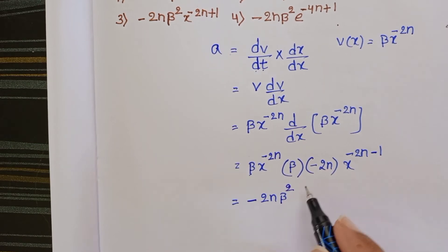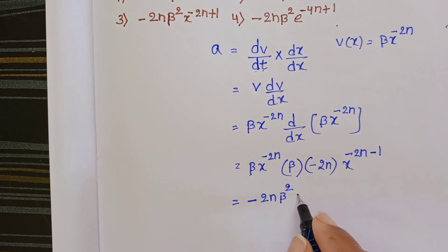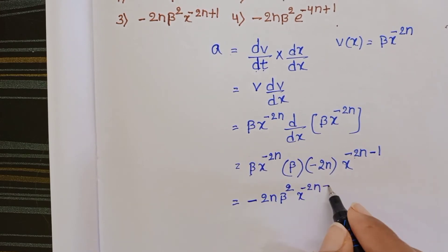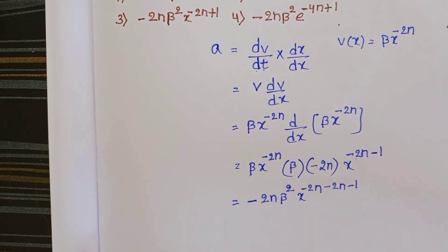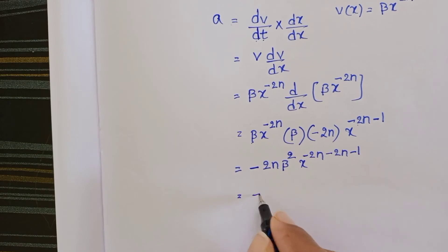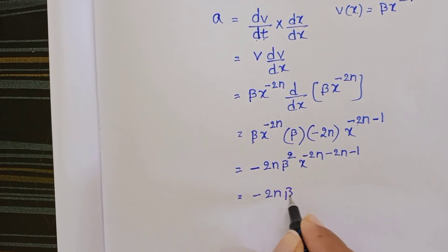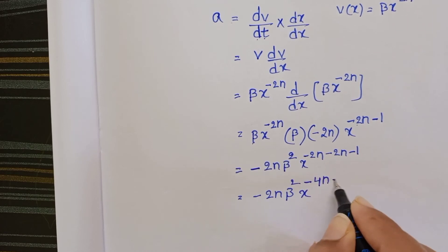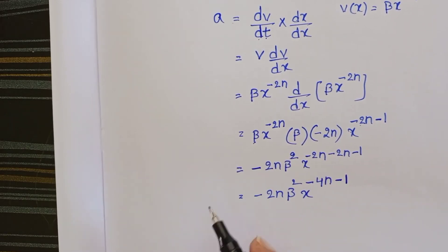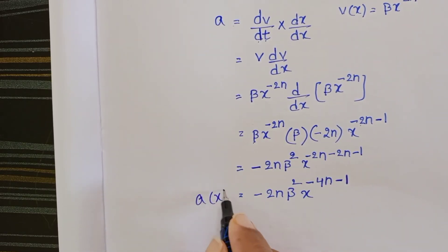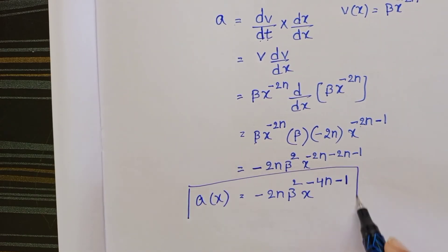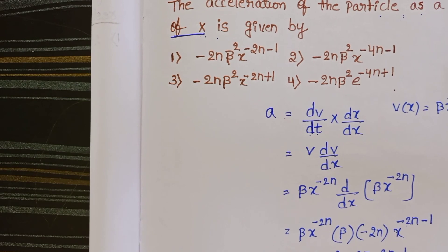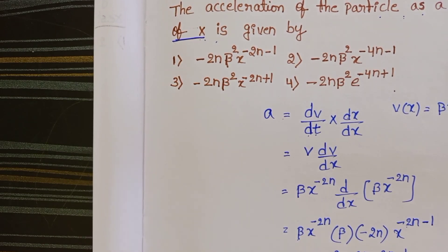Combining the terms gives x^(-4n-1). So the acceleration of the particle as a function of x is: a = -2nβ²·x^(-4n-1).